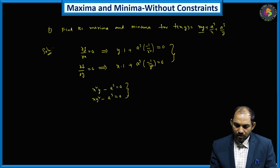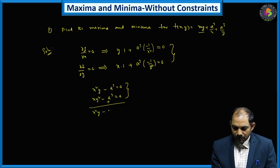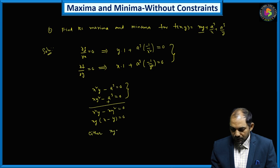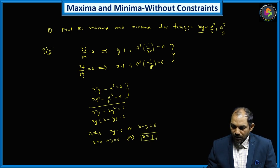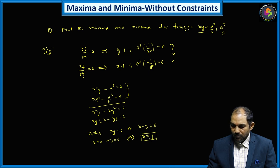We need to solve these two equations for the stationary points. Subtracting one from the other gives x²y − xy² = 0. Taking xy common, we get xy(x − y) = 0. That means either xy = 0 or x − y = 0, which further gives either x = 0, y = 0, or x = y. Let me label the first equation as equation 1 and the second as equation 2.